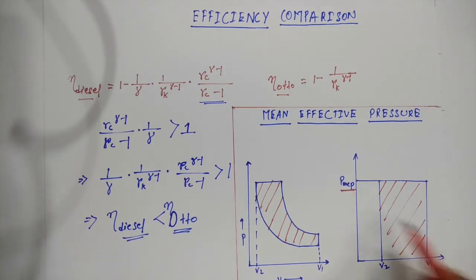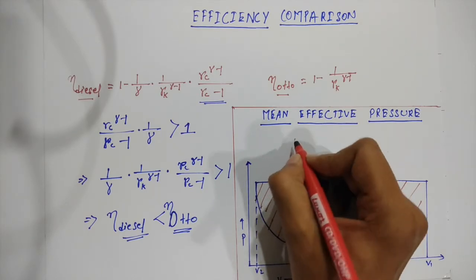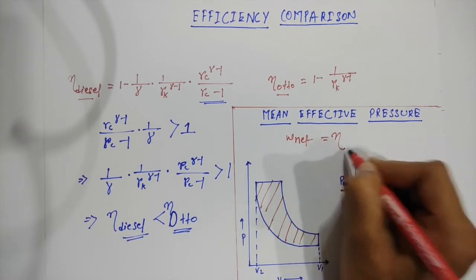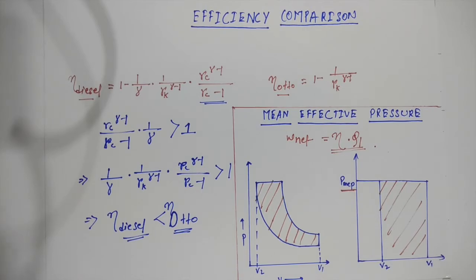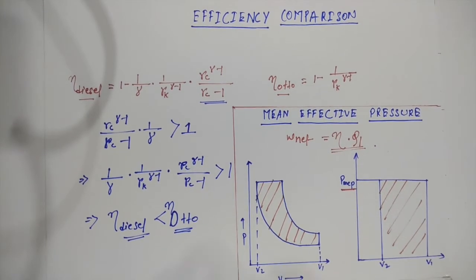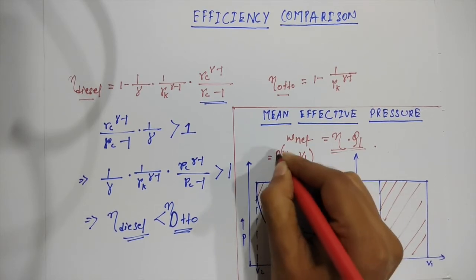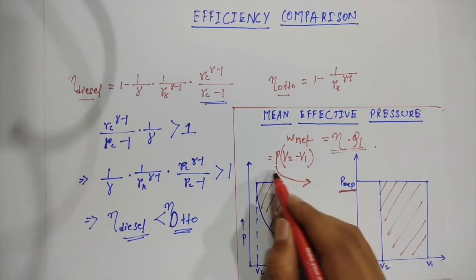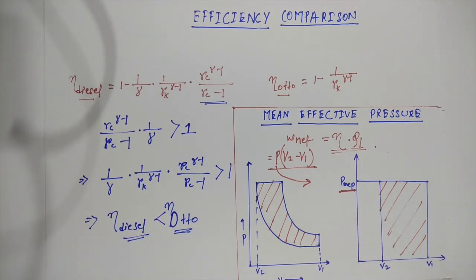We can obtain the mean effective pressure by calculating the area of the rectangle from v1 to v2. The net work done is equal to the efficiency of the cycle multiplied by the heat supplied. This net work done can also be equated as P into v2 minus v1, where P is the mean effective pressure. That is how we obtain the mean effective pressure of a diesel cycle, and with that we come to the end of air standard cycles. Thank you.